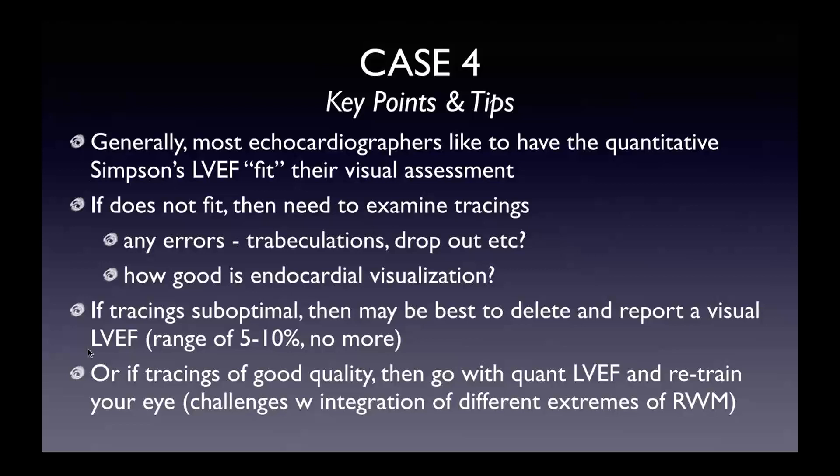Most echocardiographers are used to visual assessment — that's their bread and butter. Many trained in an era where it was all visual assessment. Many remember the grades — grade one being greater than 60%, grade two 40 to 60%, grade three 20 to 40%, grade four less than 20% — a Toronto-centric reporting system. But in today's world, a range of 20% is a very wide range of EF measurements. We need to be a bit tighter in our EF assessments.